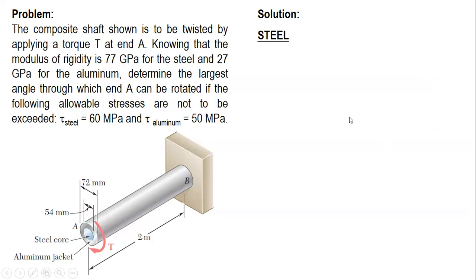We will start with steel and use the limiting value of stress, 60 MPa. This is the formula since steel is a solid shaft. Let's substitute.